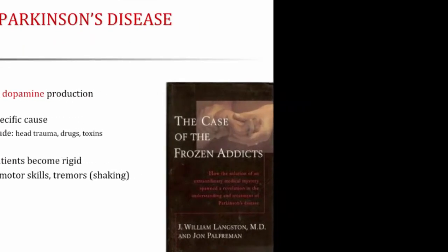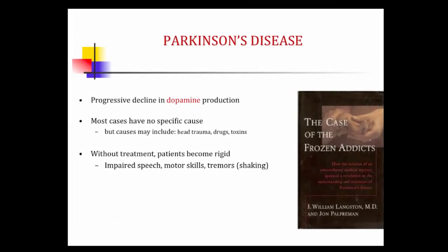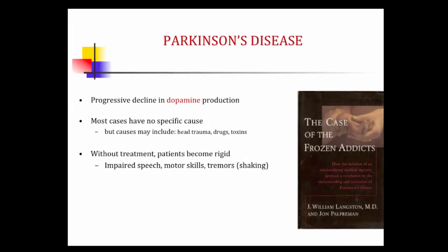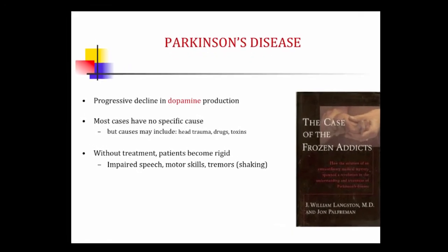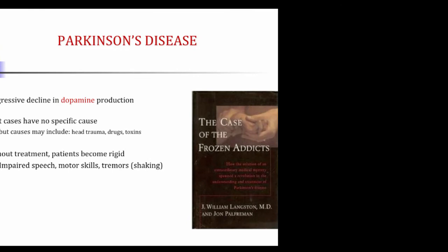The book The Case of the Frozen Addicts describes how in 1982, young people suddenly showed up in emergency rooms throughout the Los Angeles area, frozen and unable to move. They had all apparently used a synthetic heroin. They were being poked with needles and prodded with no response. Awfully, while they appeared frozen on the outside, they could feel everything on the inside. This tragedy led to development of an animal model allowing scientists to study how Parkinson's affects the brain.